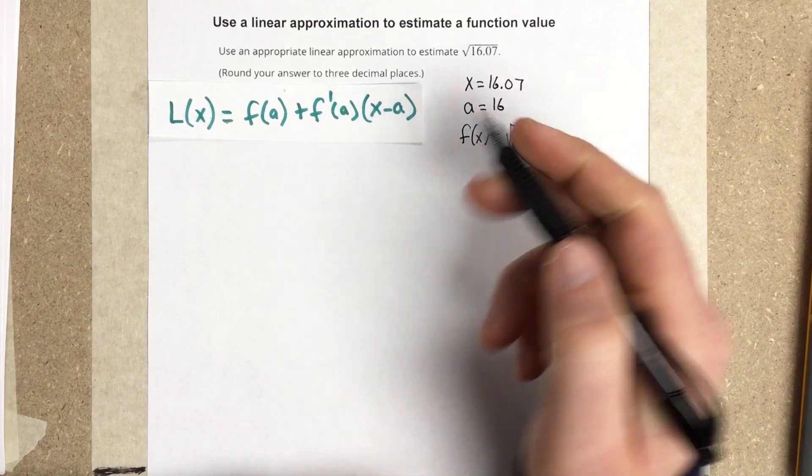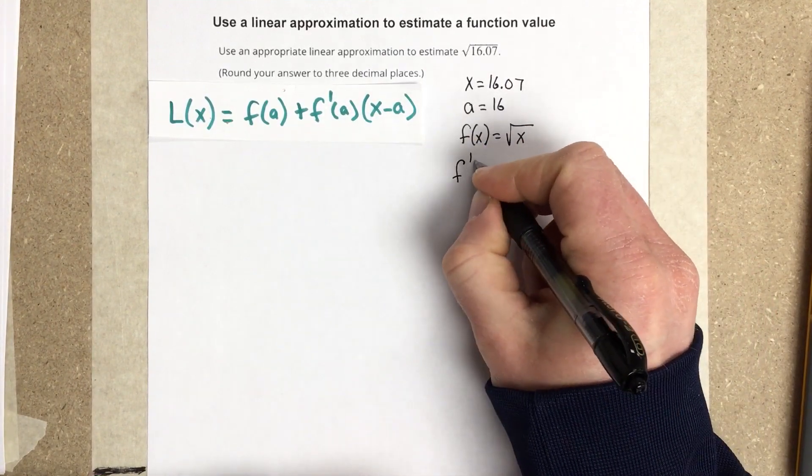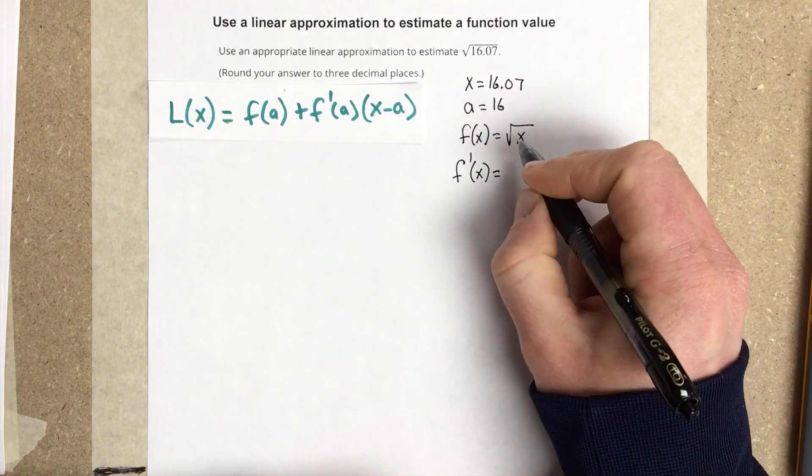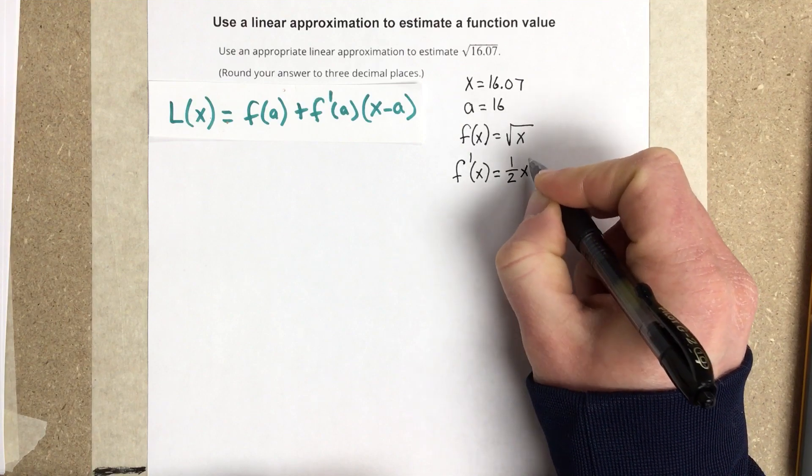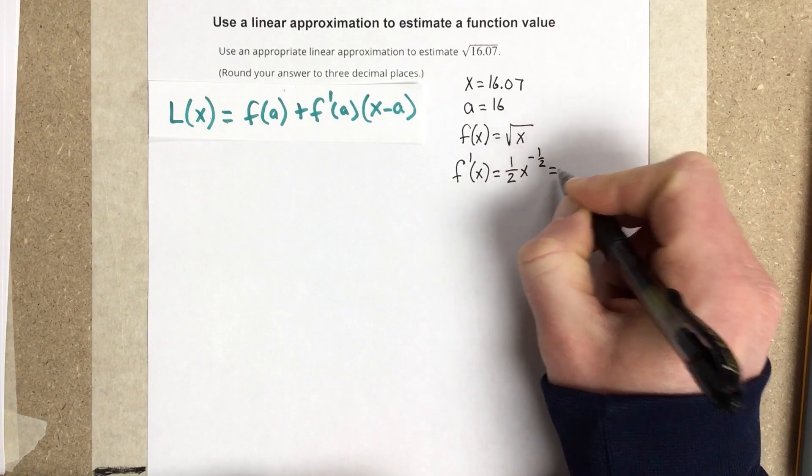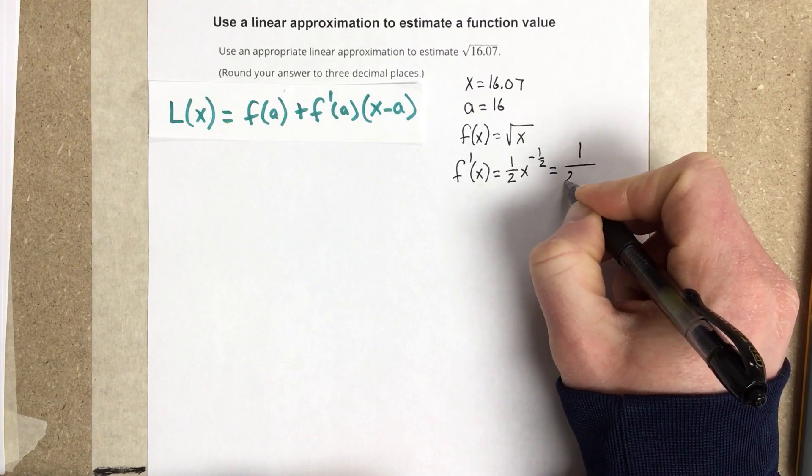Now, I need to figure out what f prime of x is, so I'm going to do that here. f prime of x would be equal to 1 over 2x to the negative half, which when I rewrite that, that's 1 over 2 root x.